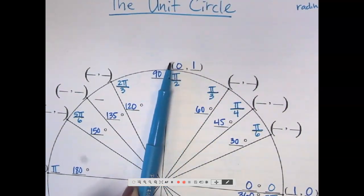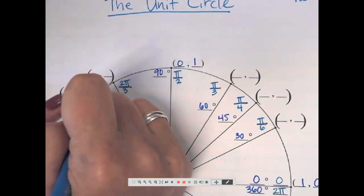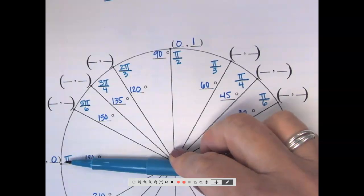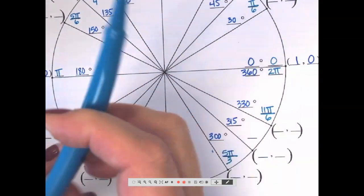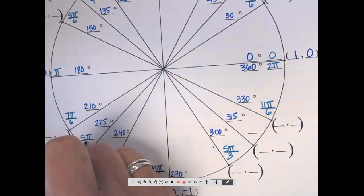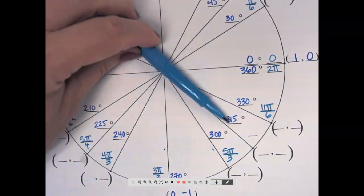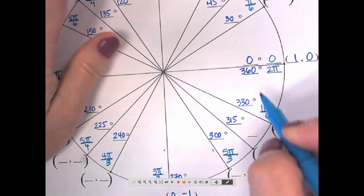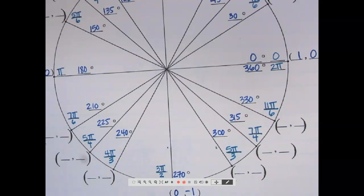2 fourths pi. 2 fourths reduces. 3 fourths pi. Doesn't reduce. 4 fourths reduces to pi. 5 fourths. Doesn't reduce. 6 fourths reduces to what we have. 7 fourths. And then we're back to 8 fourths, which is 2. So this would be 7 fourths pi. Questions on how I got any of those numbers?